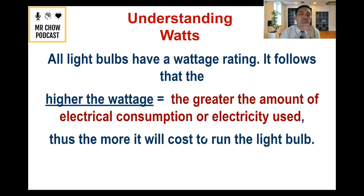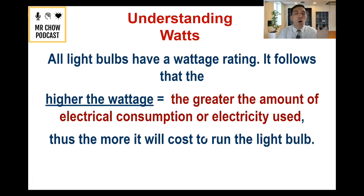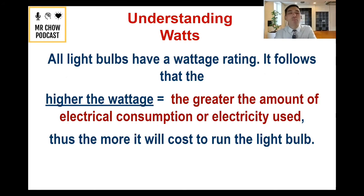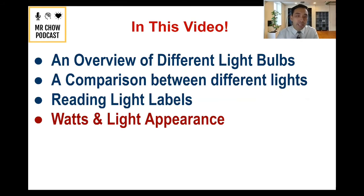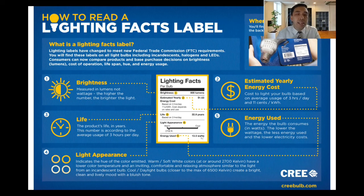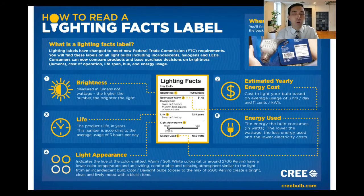All light bulbs have a wattage rating. The higher the wattage, the greater amount of electricity is used, and thus the more money it's going to cost. More wattage means more electricity used, which means more money. You can find the wattage on the bulb, and when purchasing, you definitely want to look at that because it's going to play a factor in your expenses.